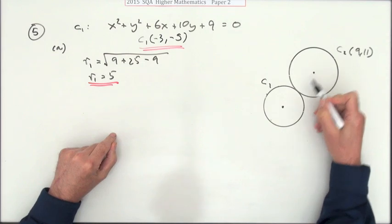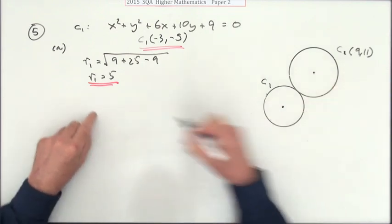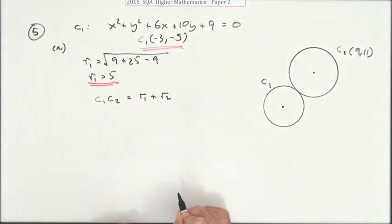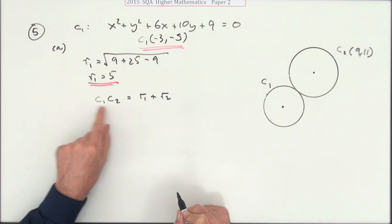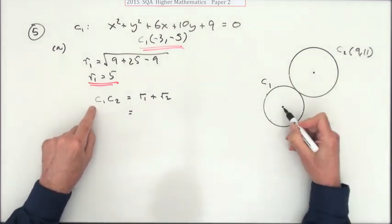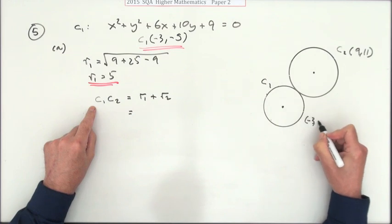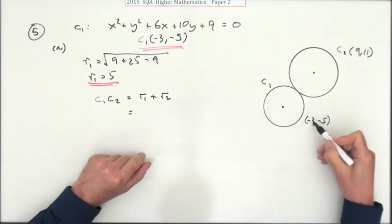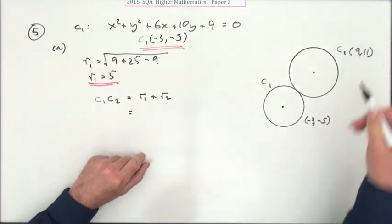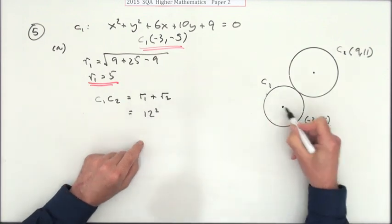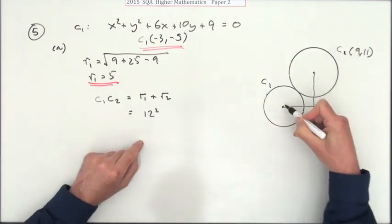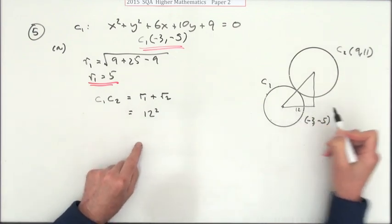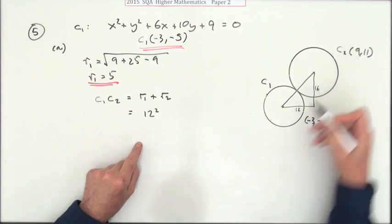If they're touching, then the distance between the centers, C1C2, would be the same as r1 plus r2. What's the distance between the centers? That means you're going from negative three, negative five to nine, eleven. You could put it in a big formula or you could just see you're going from negative three to nine, so that's 12. That's negative five to 11, so that's 16 up.